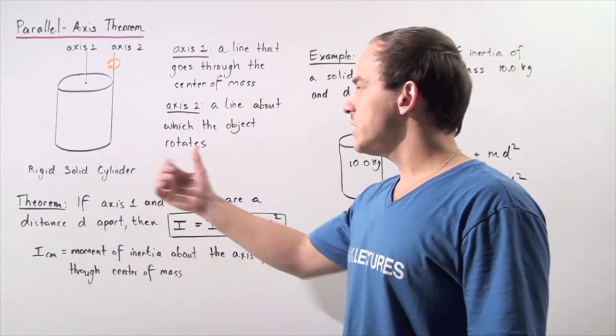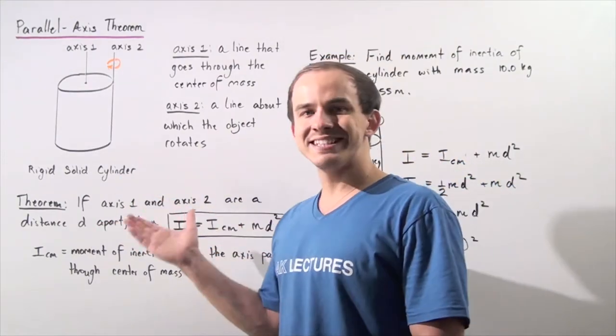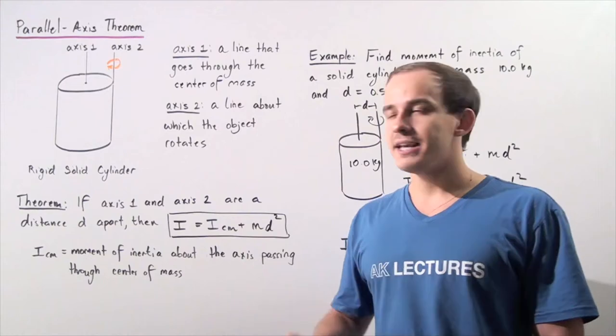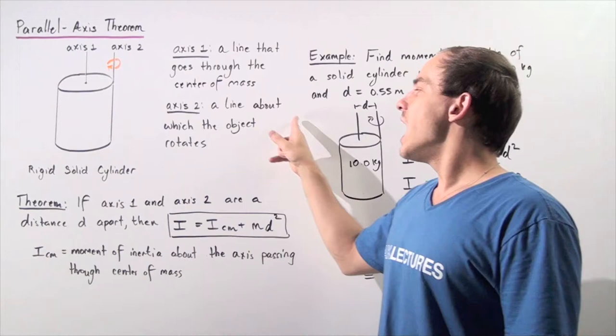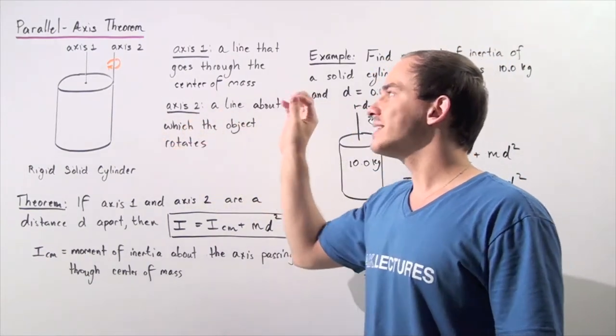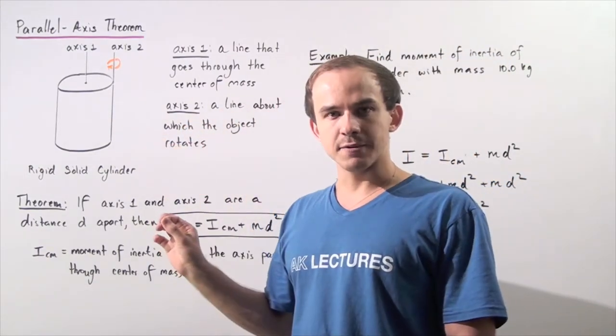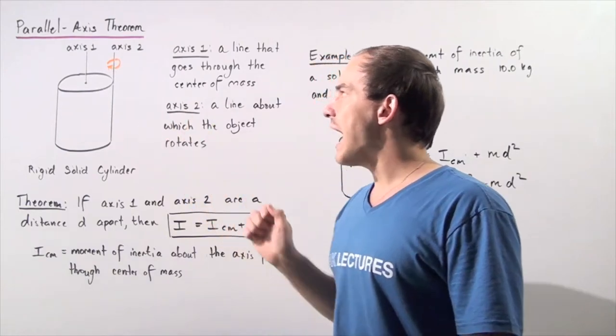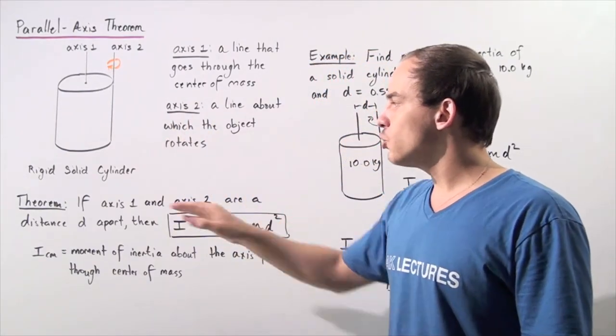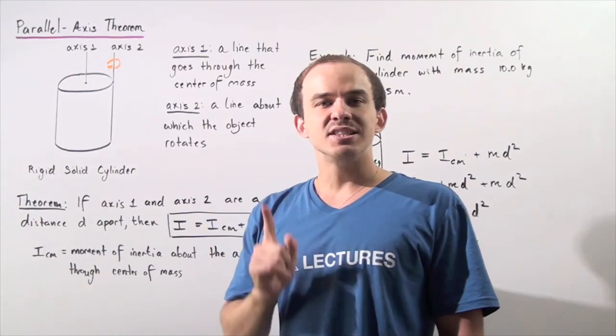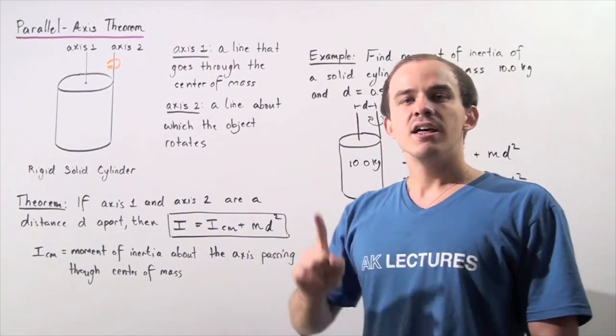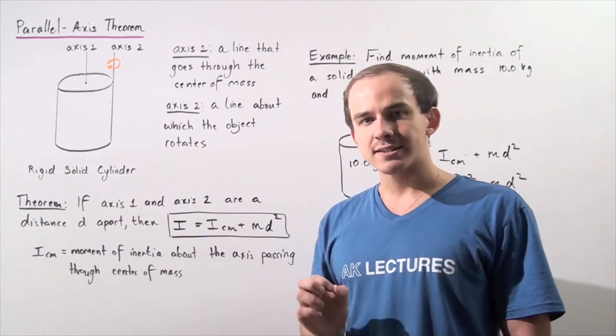Let's suppose we have the following rigid solid cylinder that is rotating about axis number two. Axis number two is simply a line about which our object is actually rotating. Another important axis that we will need to use in the theorem is axis number one. Axis number one is a line that passes through the center of mass.